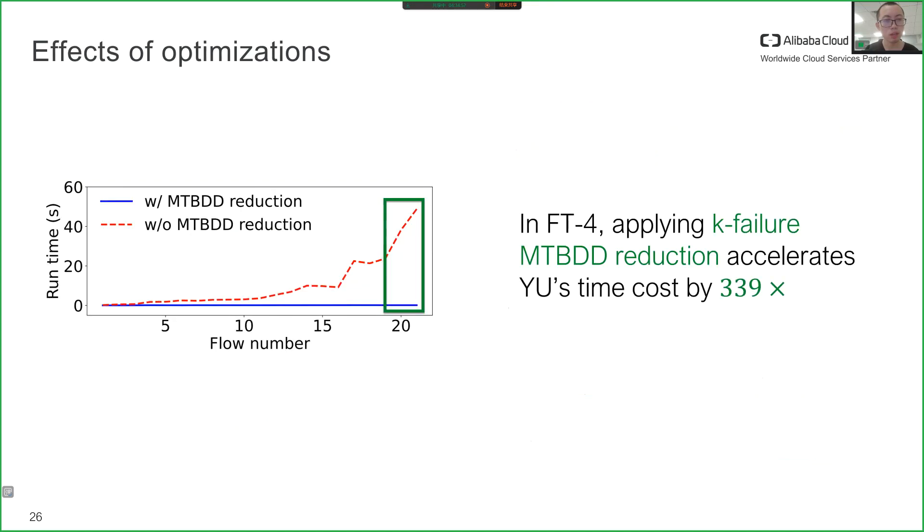We evaluated the effects of our optimizations. In FT-4, applying k-failure MTBDD reduction makes Yu 339 times faster.